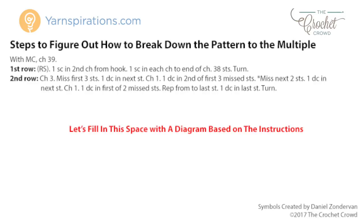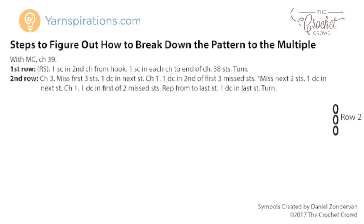Here's a cool trick: row number one was just the same stitch underneath what we're going to do in row two. As we complete row number two we're going to fill in the information underneath with row number one at the exact same time in order to solve the mystery. In row number one all we have is one single crochet in each stitch. So whatever we do in row two is going to sit in a single crochet in the row below. When skipping over stitches just draw in the single crochets to fill the spaces of where you're skipping in row number one.